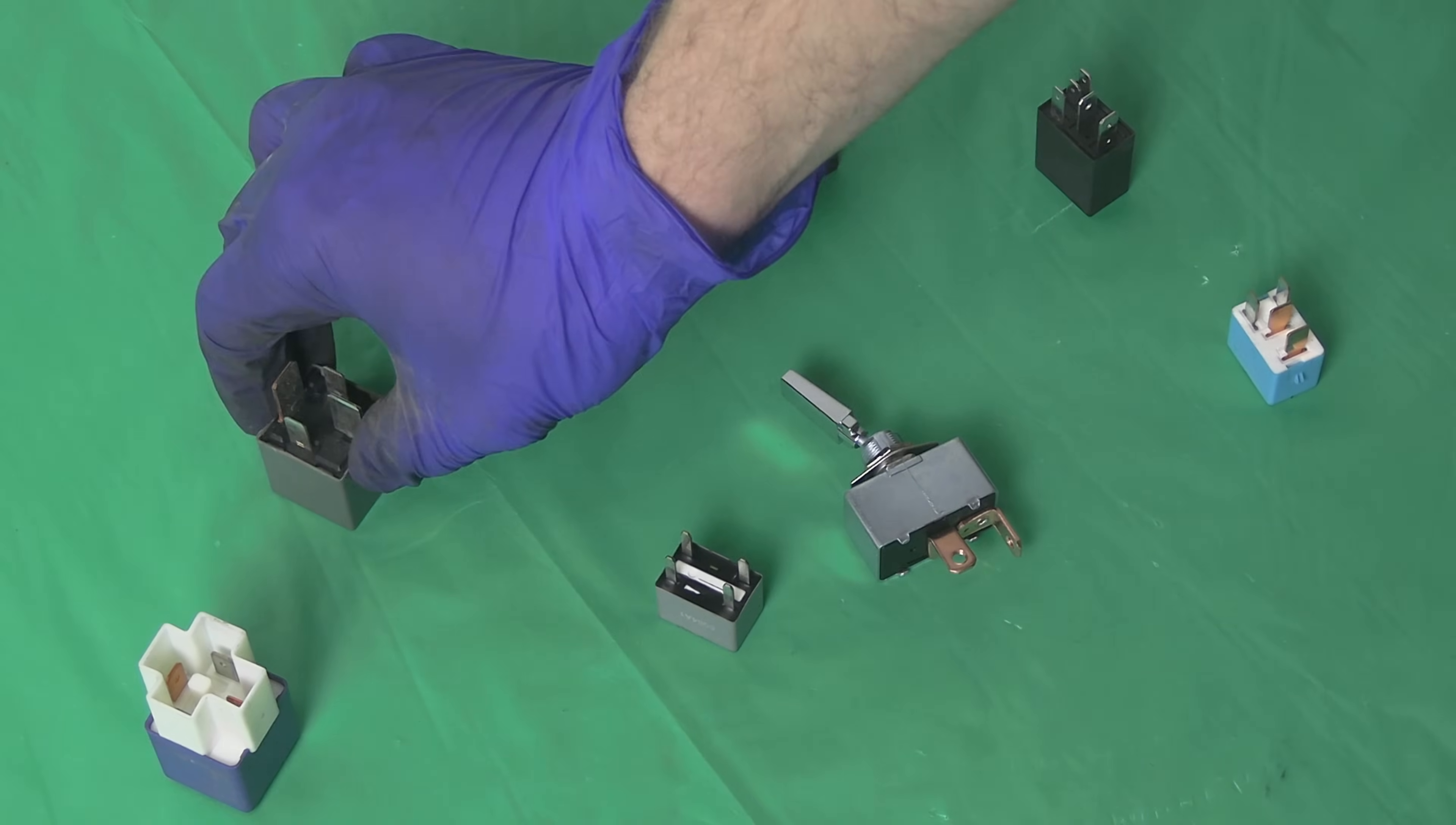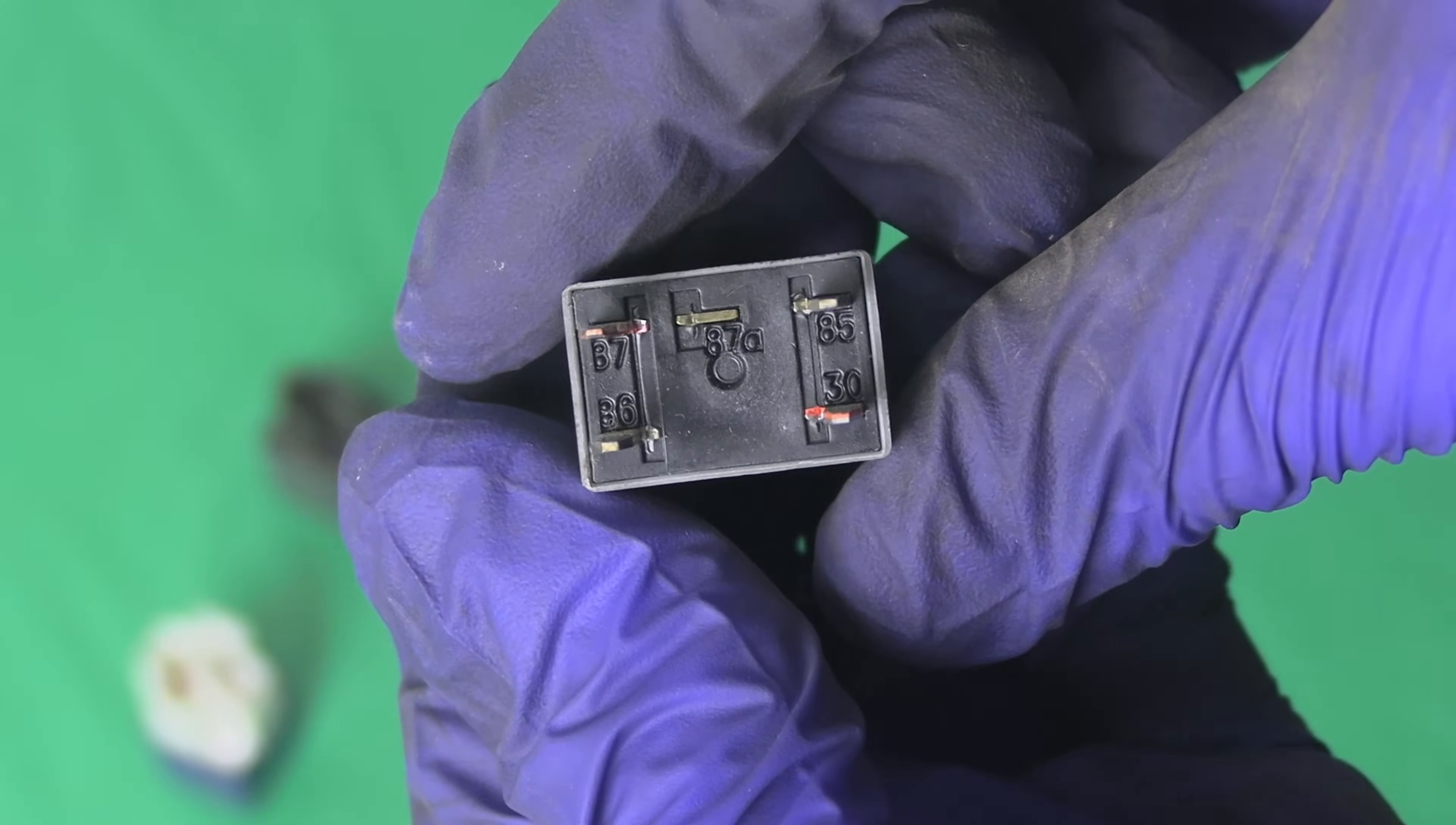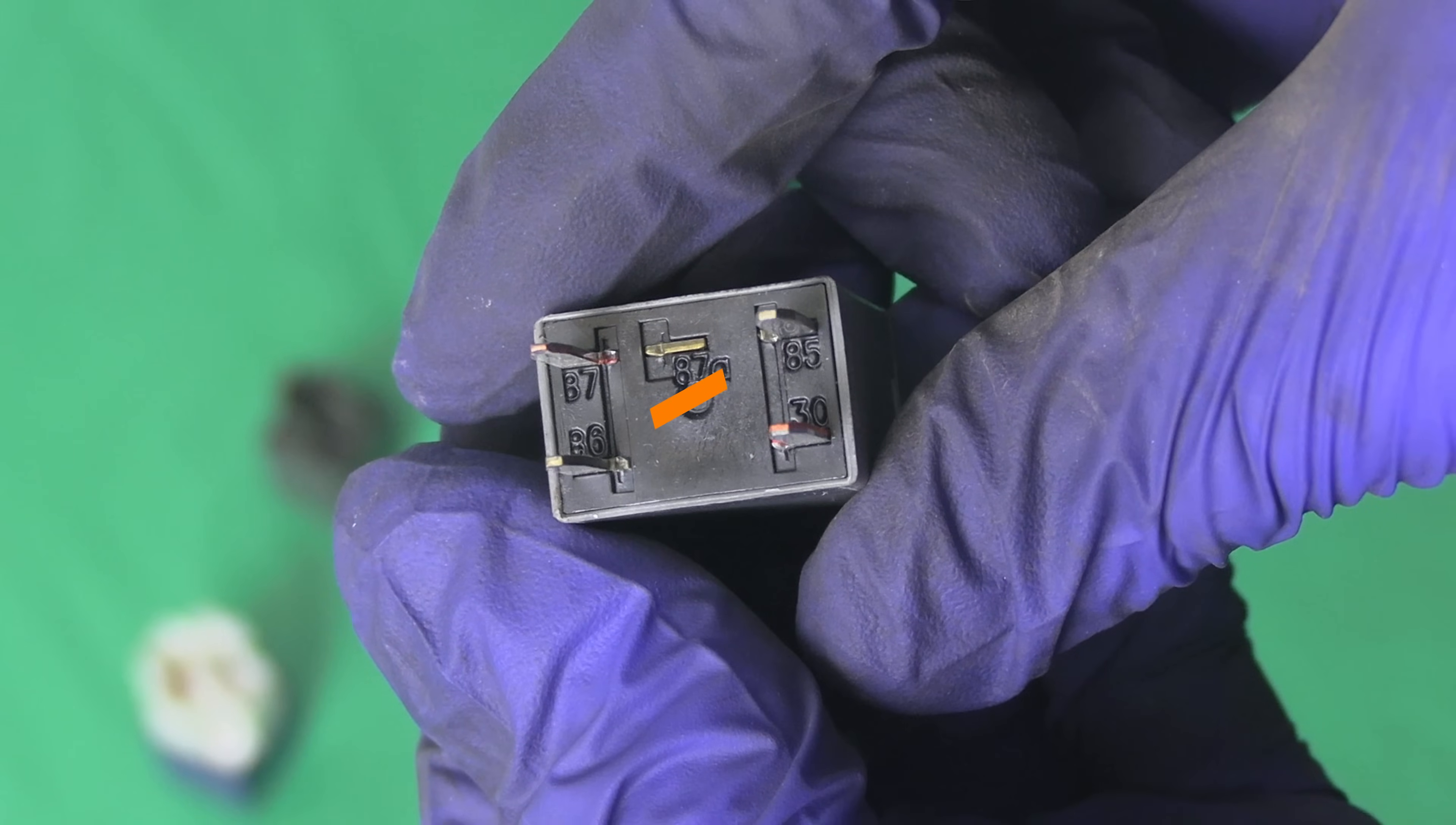If your pins are in the four corners of the relay, like this, pins diagonally opposite from each other will usually be connected. One pair is for the control circuit, the other pair is for the load circuit.